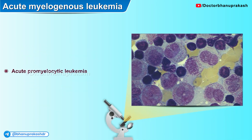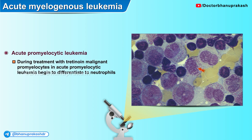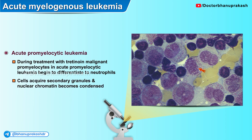Here is a histopathological image of a patient with acute promyelocytic leukemia. During treatment with tretinoin, malignant promyelocytes in acute promyelocytic leukemia begin to differentiate into more mature neutrophils. The cells acquire secondary granules and the nuclear chromatin becomes much more condensed in comparison with the delicate nuclear chromatin seen with AML.